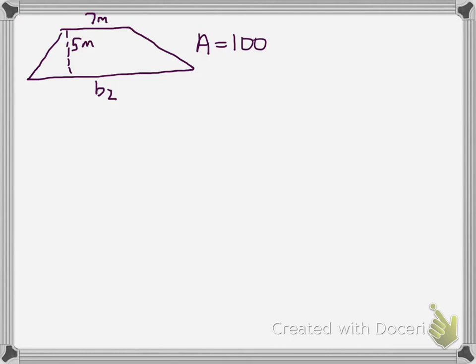We're going to start by setting up our formula. So our formula here is going to be area is equal to base 1 plus base 2, times the height, times 1 half.